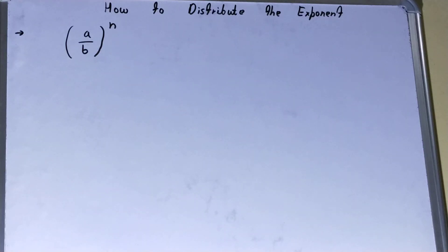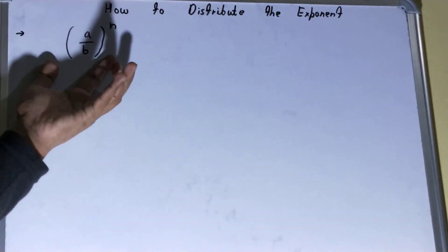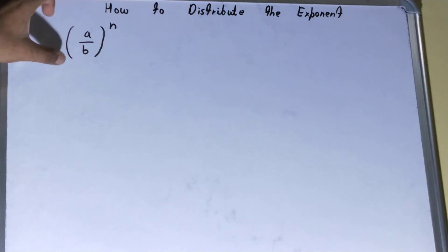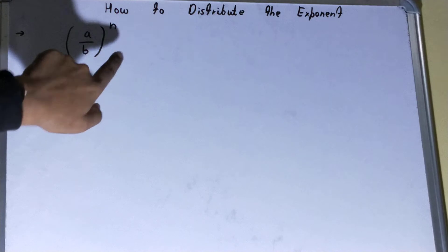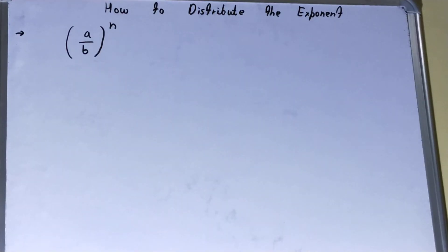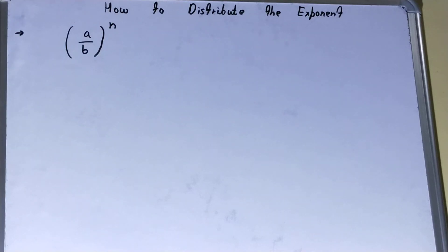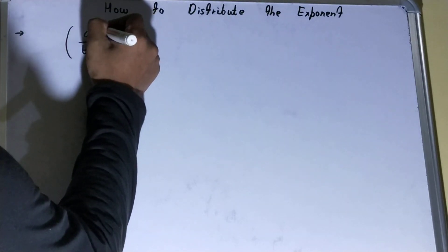Hello friends, in this video I'll be helping you with how to distribute the exponent. If there is a fraction that exists within a bracket and outside the bracket there is an exponent, then how you can distribute this exponent among each of the values, variables, or terms.